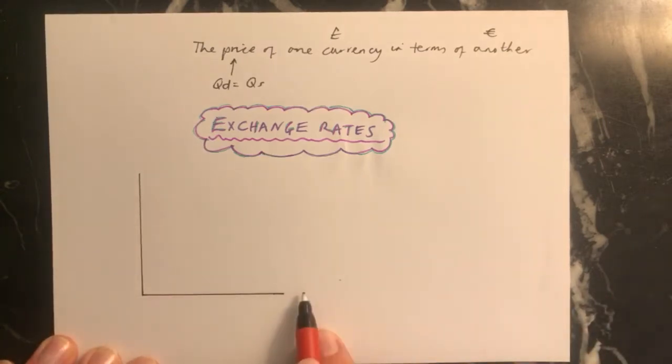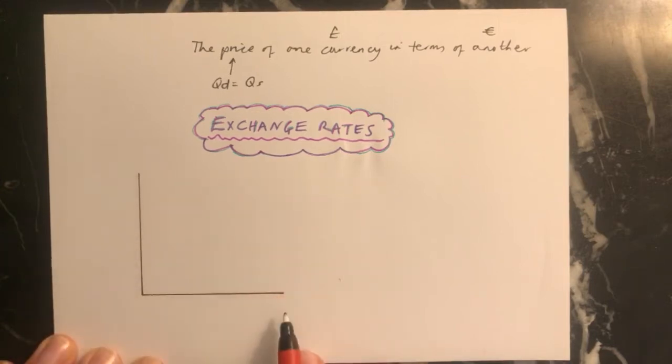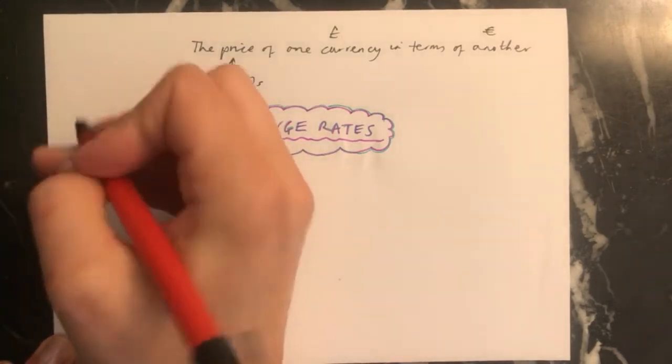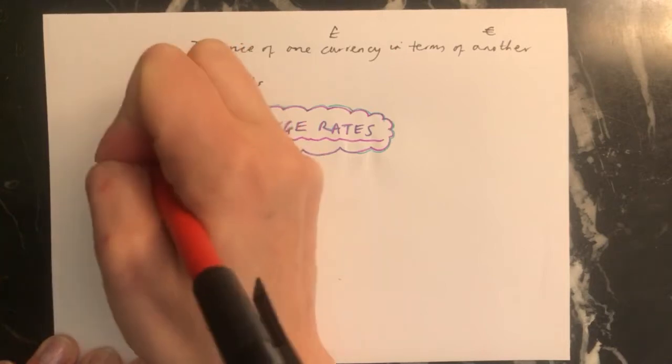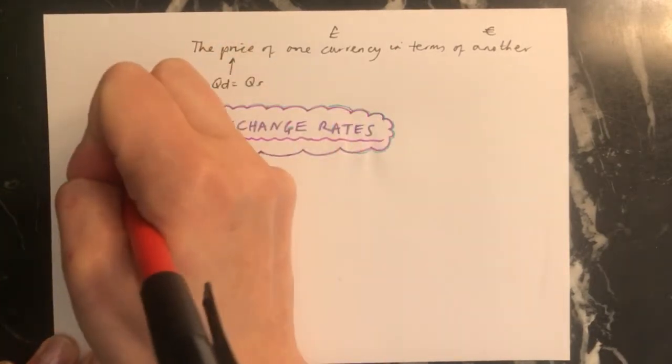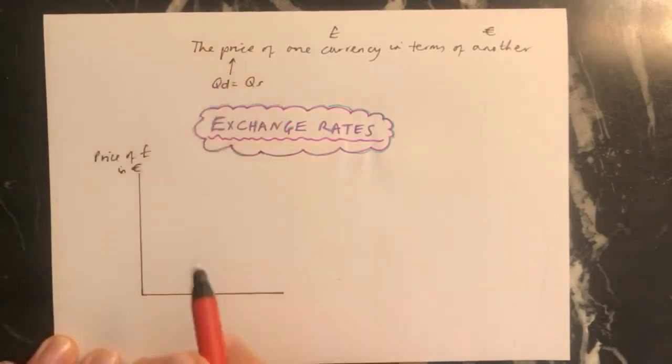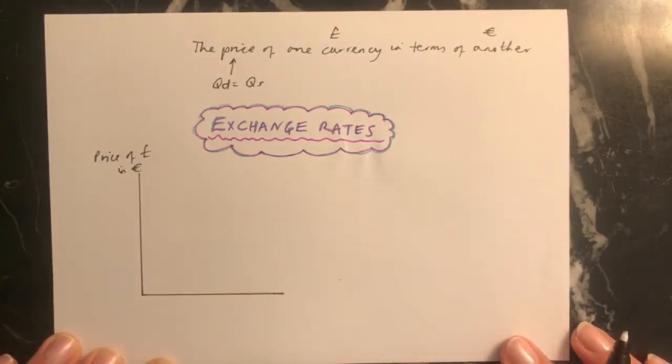What the difference is here when you're labelling the axes, normally P and Q, price and quantity, but here you need to make sure that you're writing, for example, the price of pounds in euros. It's not just price, you have to say which currency you're looking at against which one you're measuring its value in.